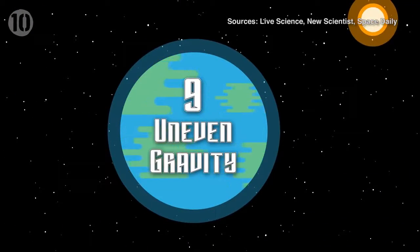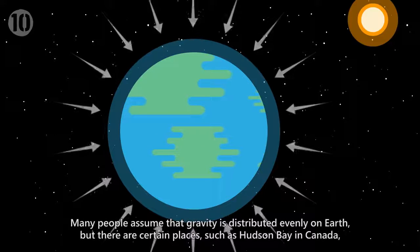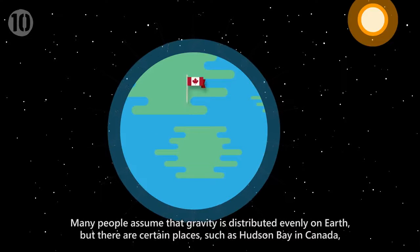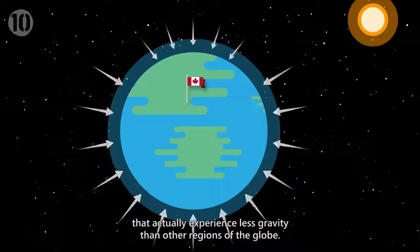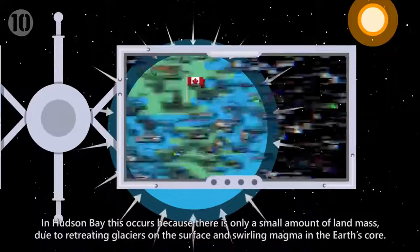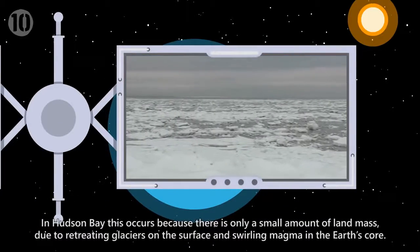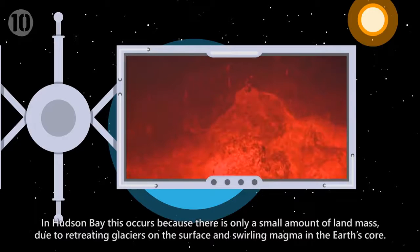Number 9: Uneven Gravity. Many people assume that gravity is distributed evenly on Earth, but there are certain places, such as Hudson Bay in Canada, that actually experience less gravity than other regions of the globe. In Hudson Bay, this occurs because there is only a small amount of land mass due to retreating glaciers on the surface and swirling magma in the Earth's core.